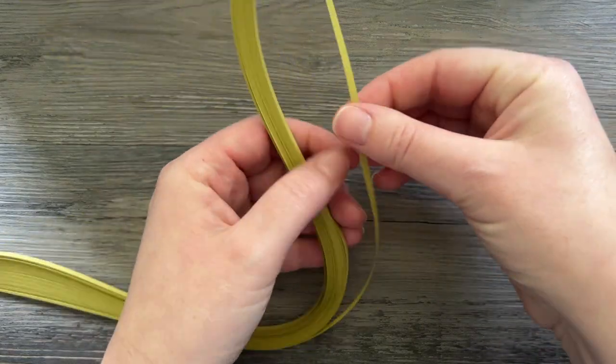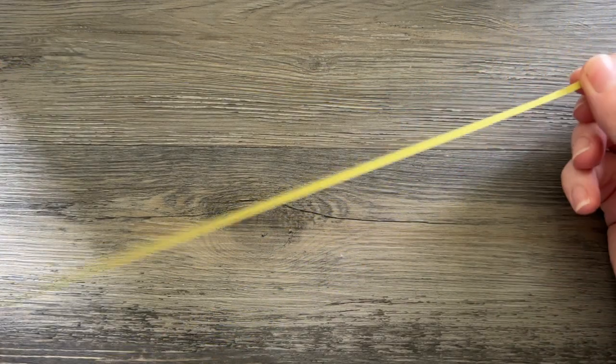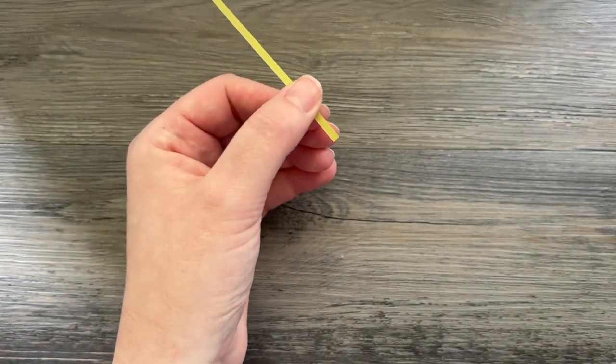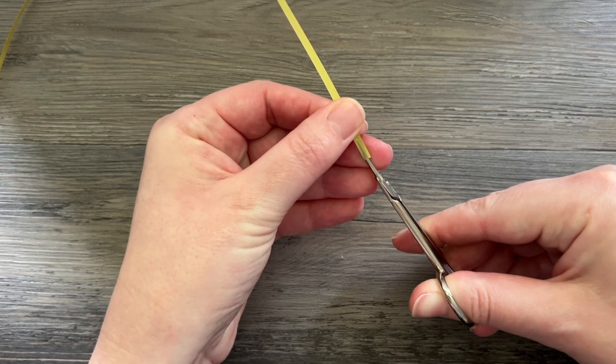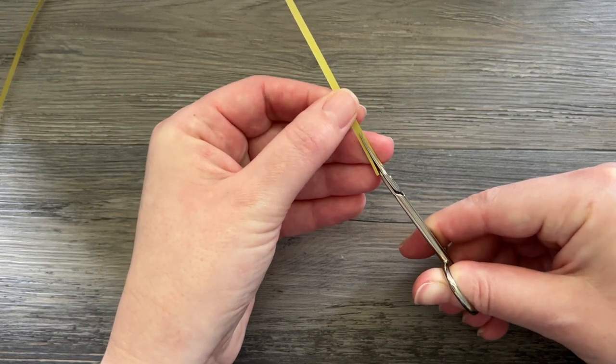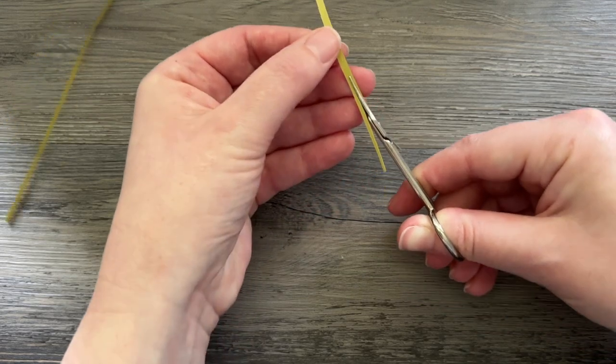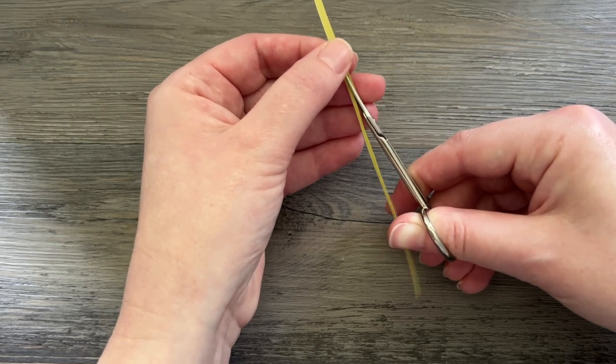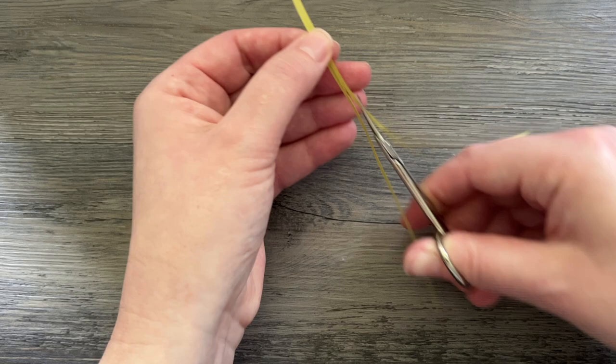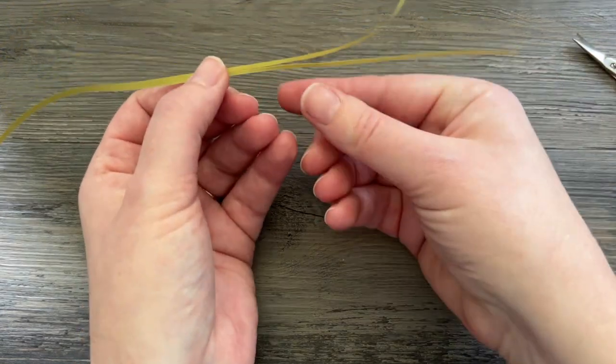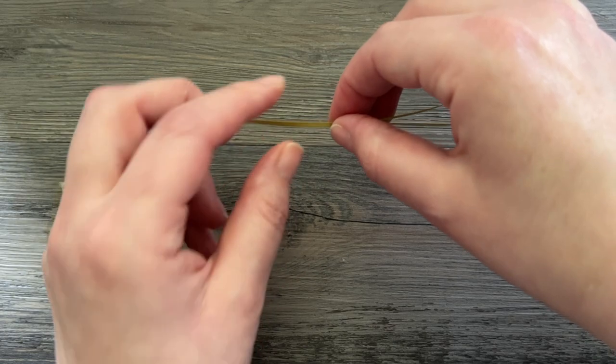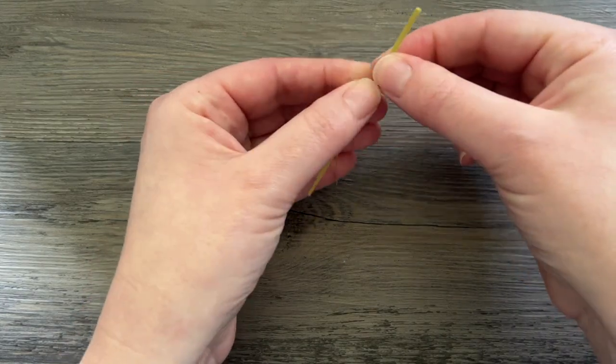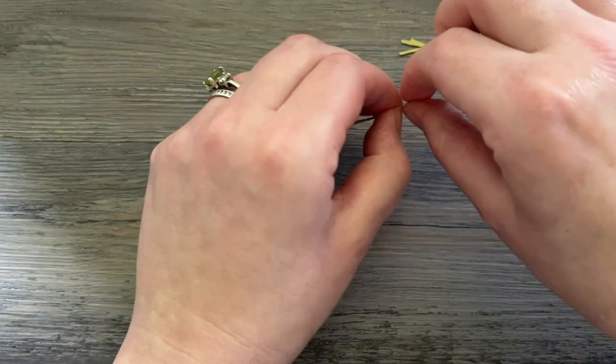While those petals are drying and sticking together, we're going to make the center of our flower. That's going to be with that mossy green color. You can use yellow for this if you'd rather. I just don't use this paper very often and I thought it fit really well to this part of the craft. We want these to be really, really thin. If you have one-sixteenth inch strips, by all means use that. If you have two millimeter strips, that will also work. I don't have either in this color, so I'm going to take my scissors and very carefully cut it in half. I only need about four inches for this part though, so it doesn't take very long.